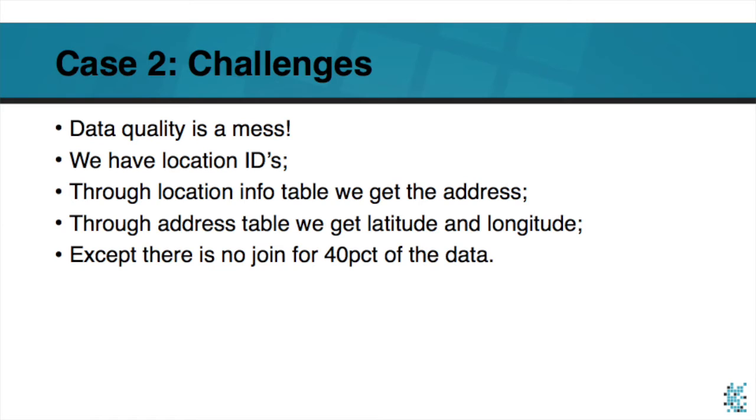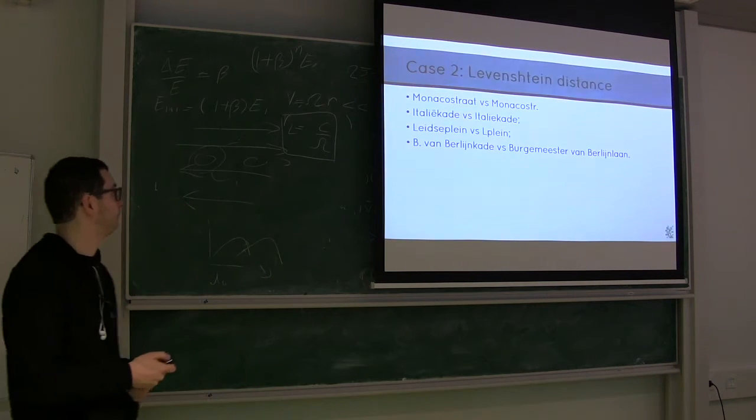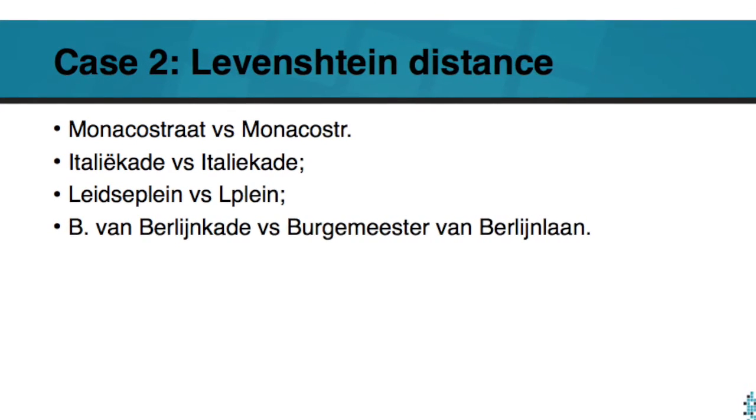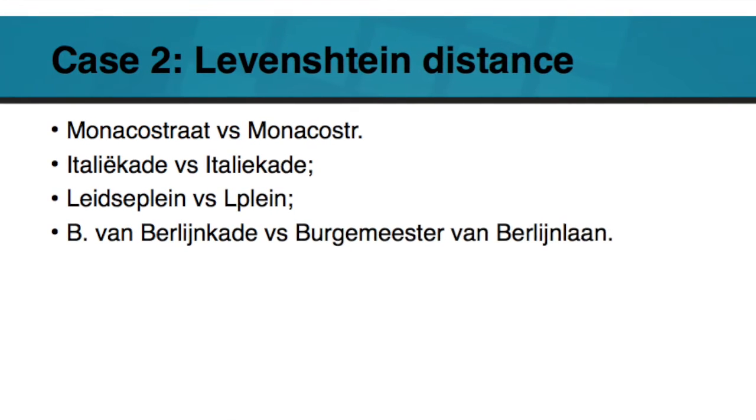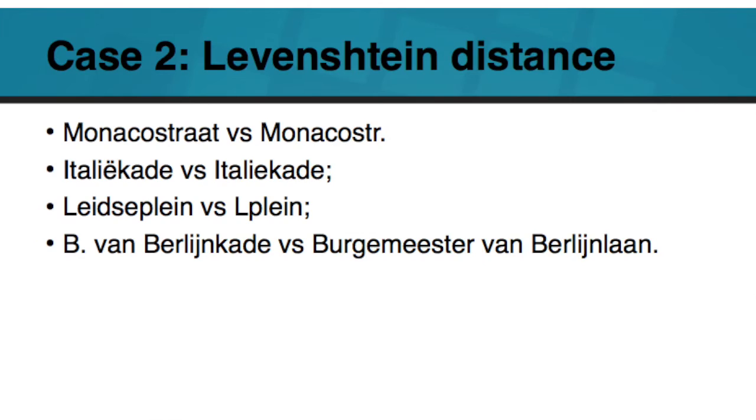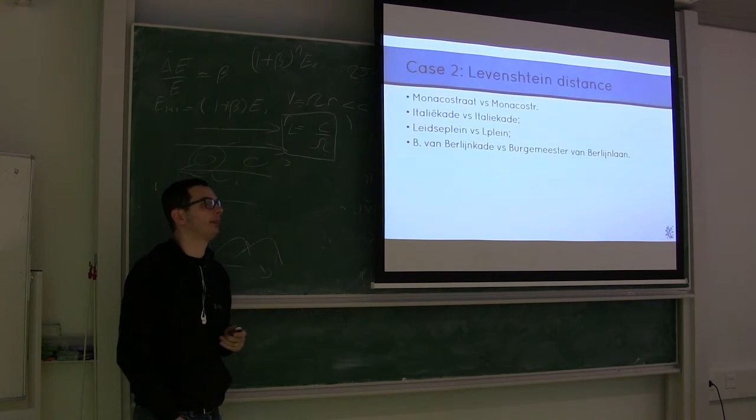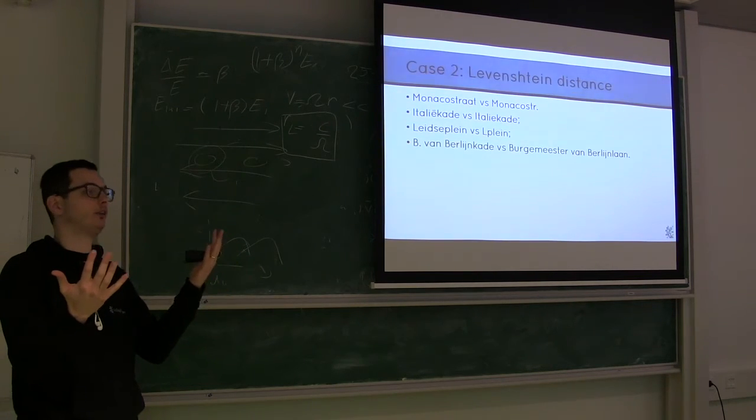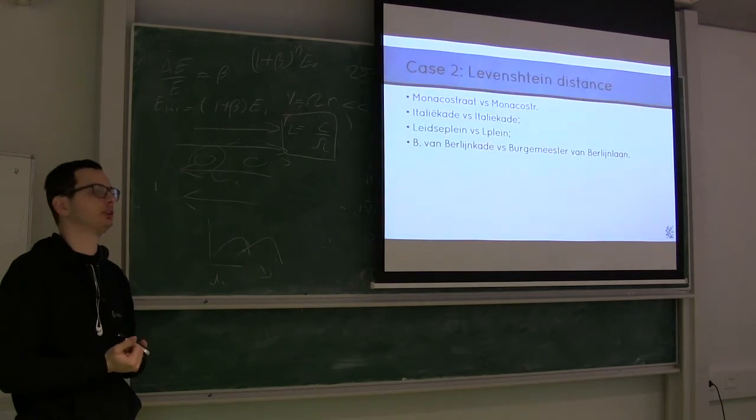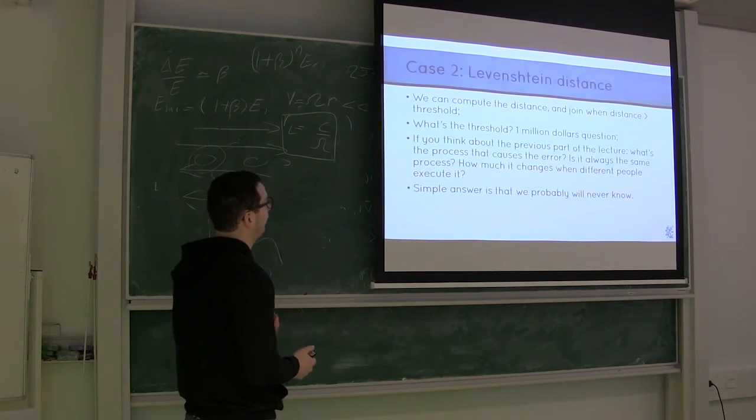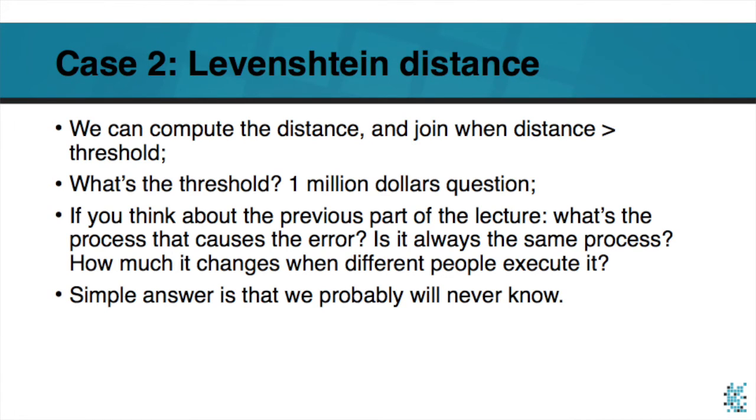Except that for 40% of the data we cannot join the table with location ID with the table with latitude and longitude. And the reason is people put in Monaco strut in one table and Monaco strut in the other or Italia Cade and Italia Cade without the umlaut. Or instead of Leitzel plane they put L plane and so on. So to solve that we use the Levenshtein distance. Who knows what the Levenshtein distance is? So it's basically a method and it allows you to compare two strings and to say how many changes you have to make in a string to get to the other.